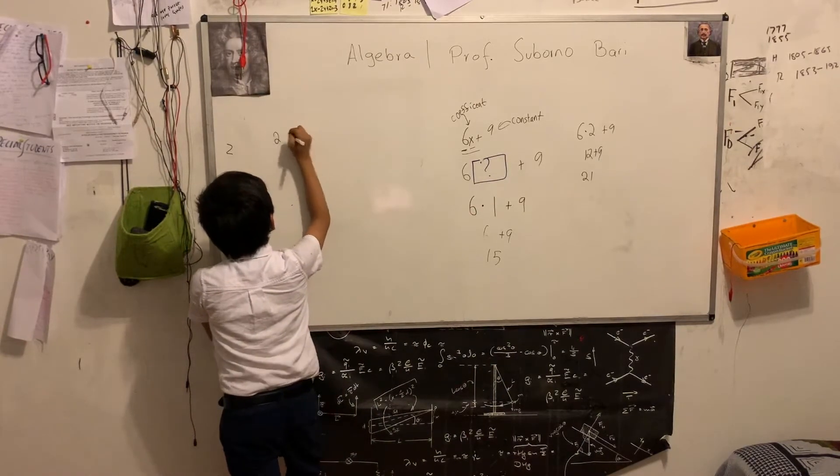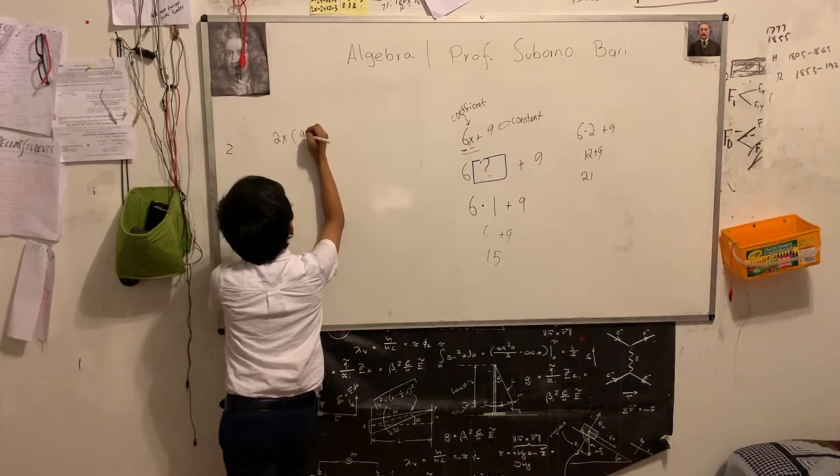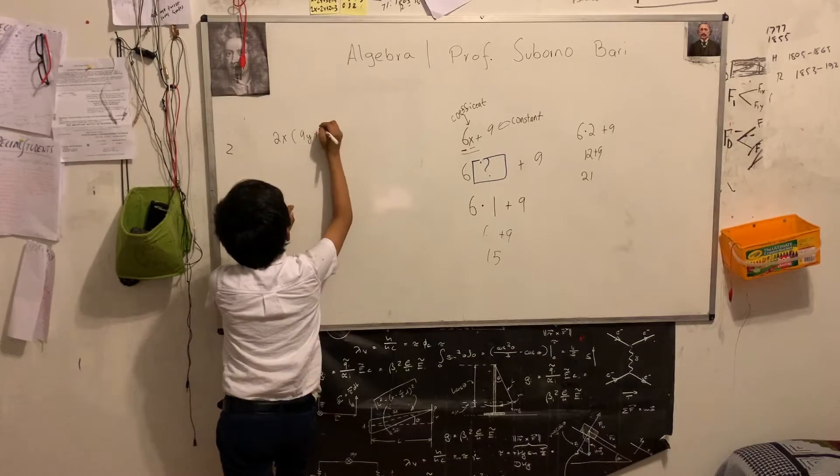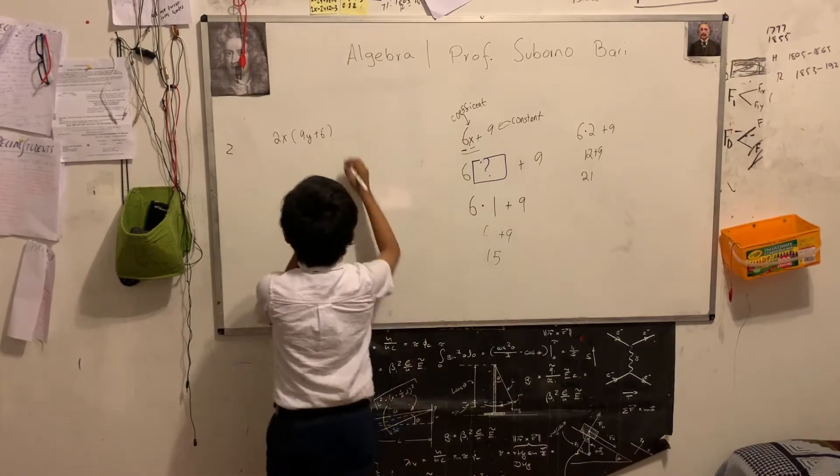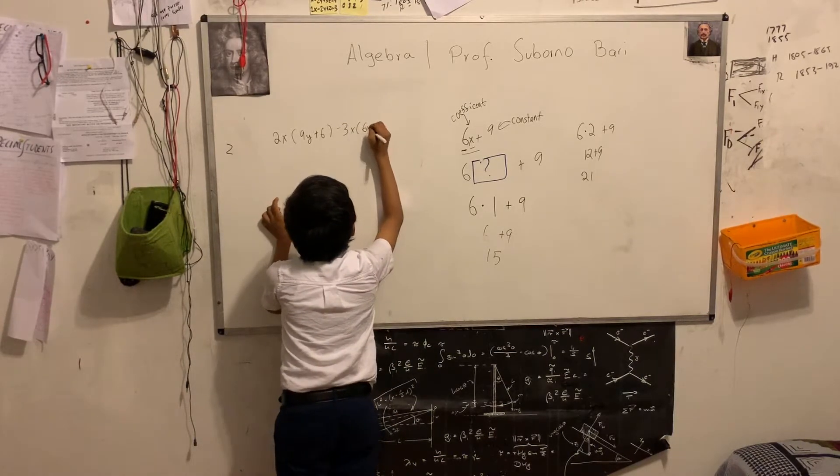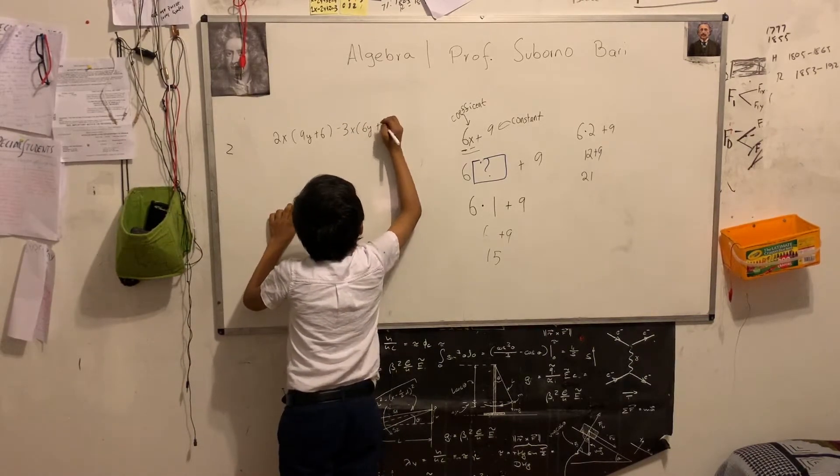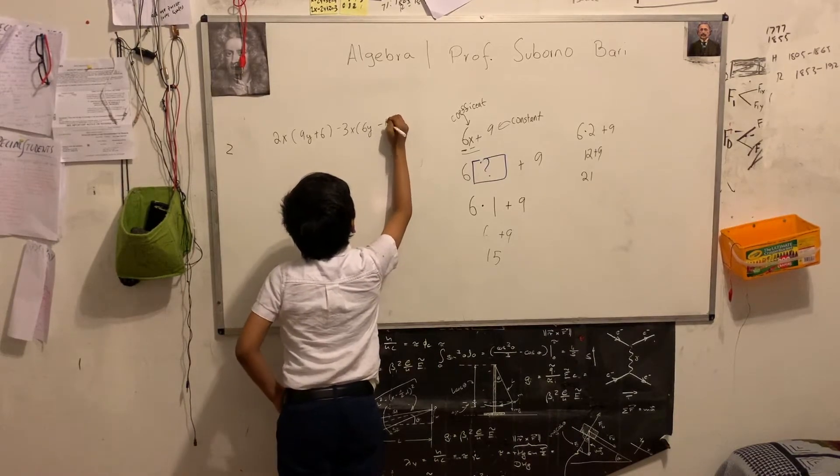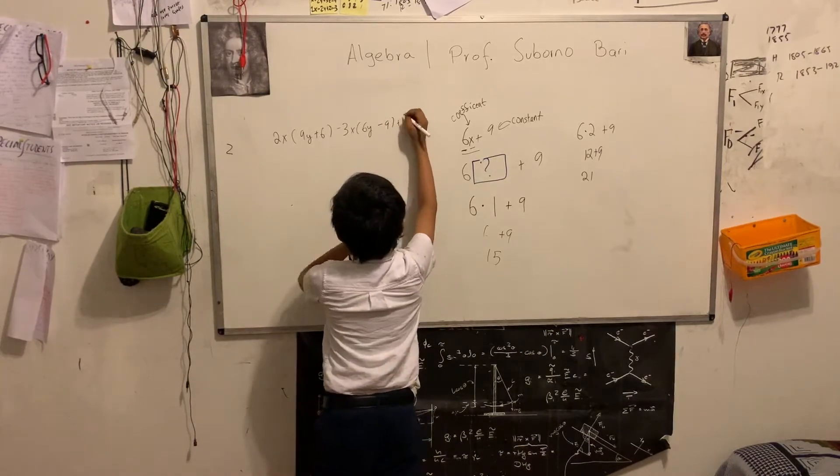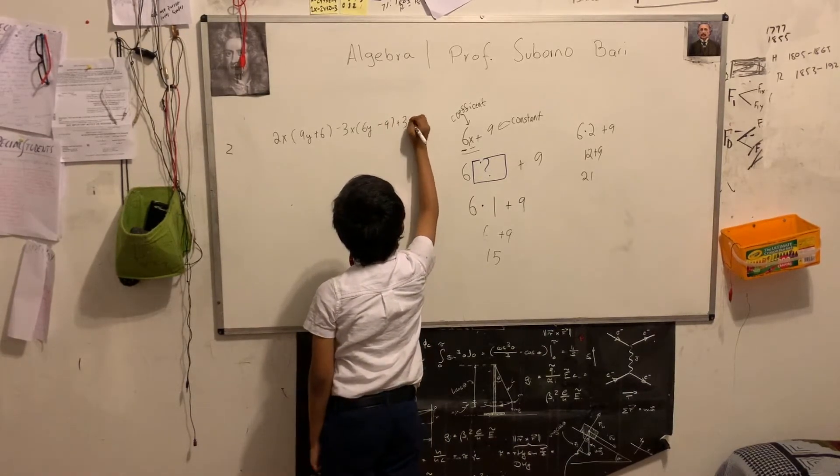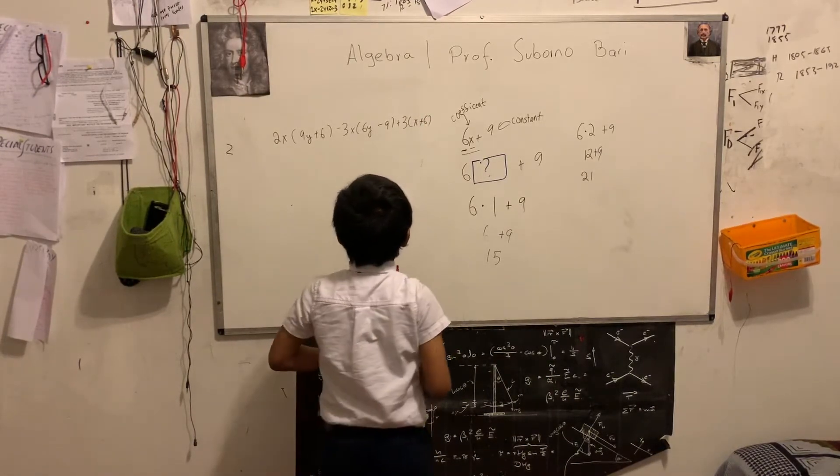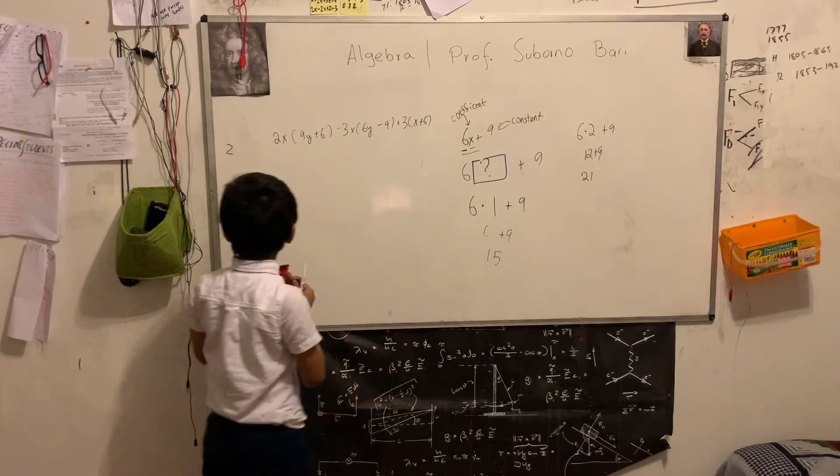So, 2x times 9y plus 6 minus 3x times 6y plus 6y minus 19. No, that's too big of a number. Let's say 9. Then plus 3 times x plus 6. So now, let's simplify.